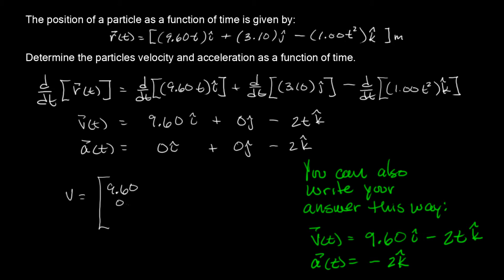9.600, and this would be 2 t, right? And then the acceleration, well, this would be my velocity vector. My acceleration would just be 0, 0, negative 2. Okay, this is just notation. Don't get scared of it. It's something you'll see later on anyway, or if you haven't seen it already. It's just notation. That's basically it.